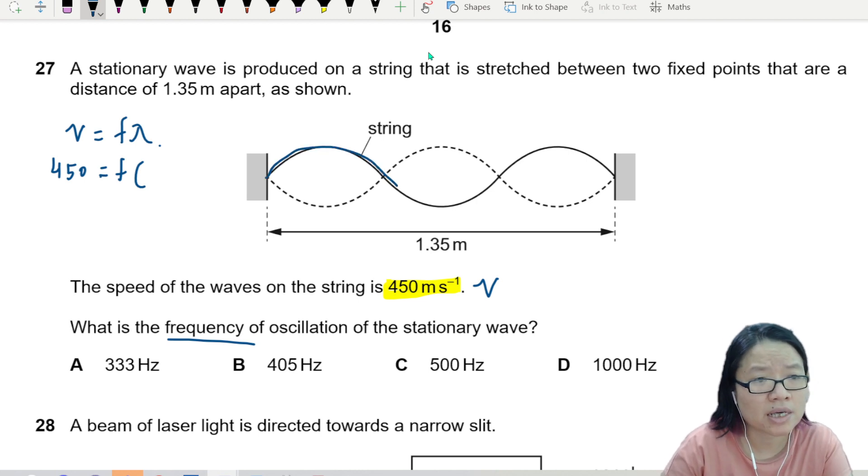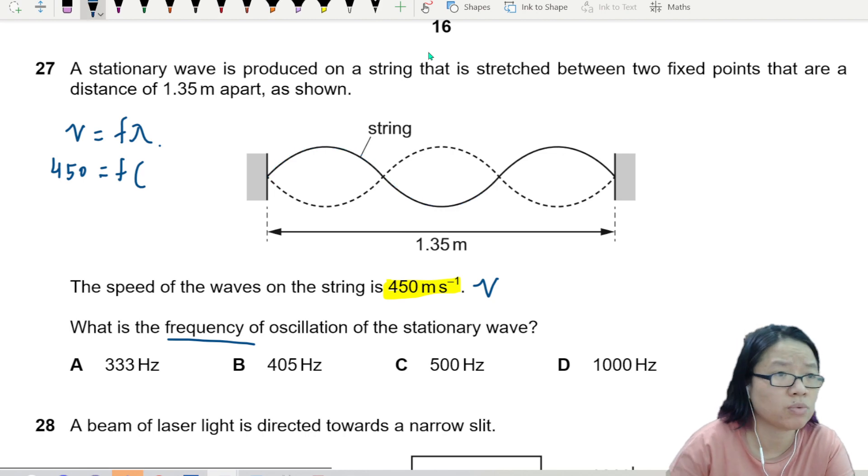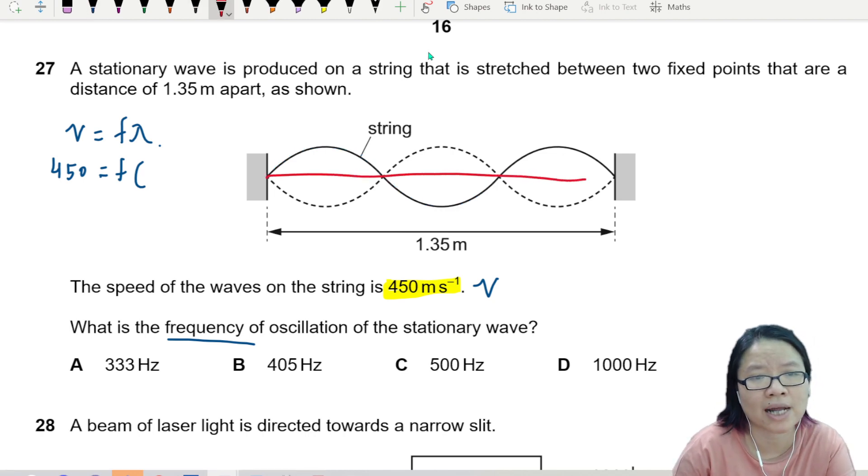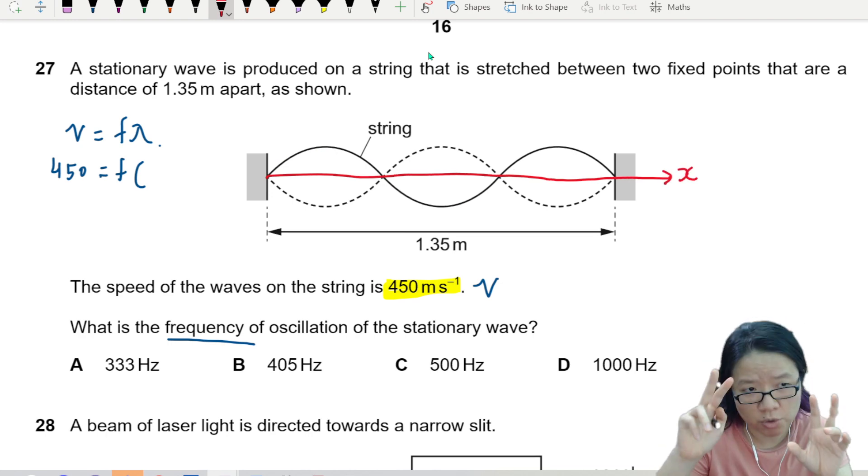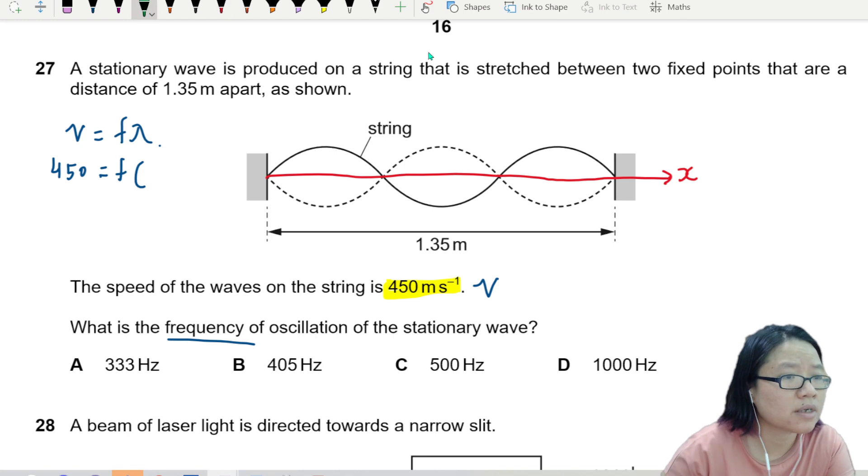You see, here to here is one cycle. If you really cannot see, what I would recommend you can just take a ruler during the exam and just chop it in this direction. This is your x-axis. So if this is your equilibrium position, then here to here is one lambda.